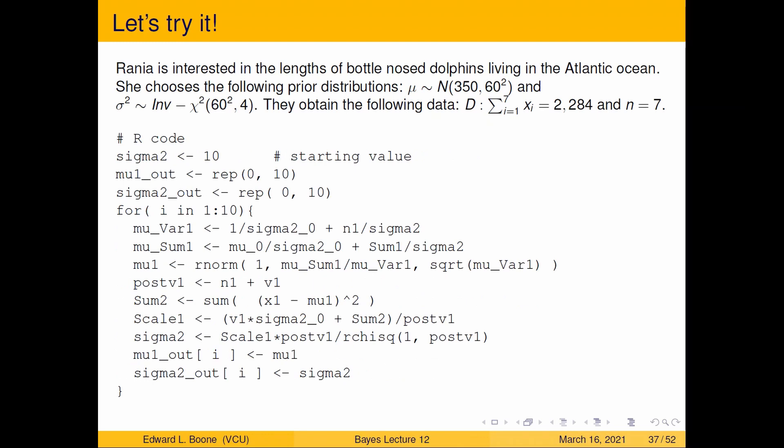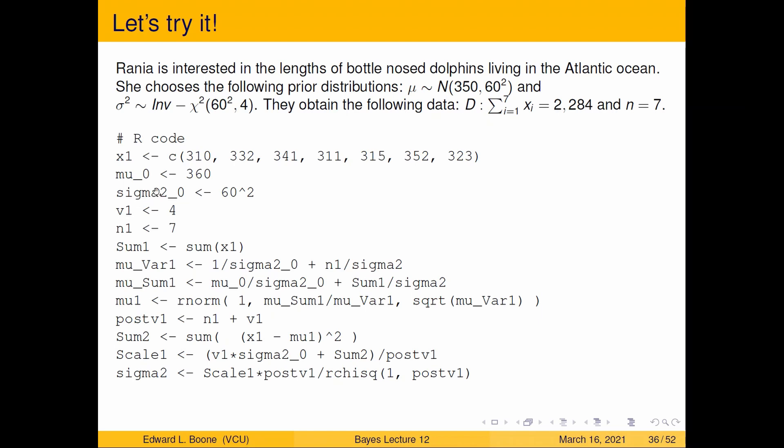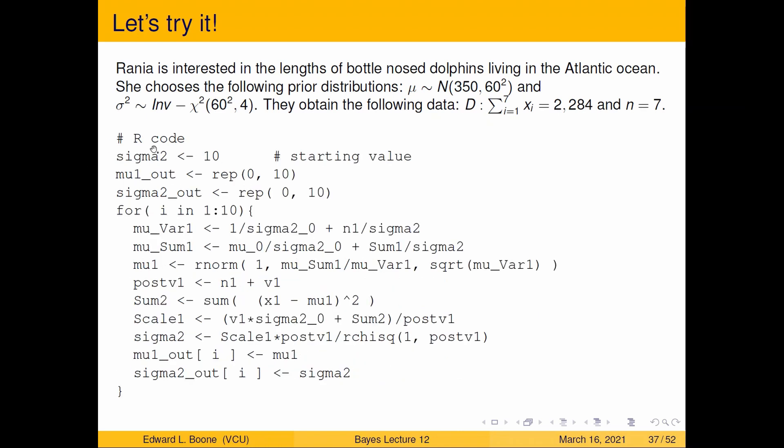Now we've got to put it in a loop. And since we're putting it in a loop, we've got to make some containers to hold the answer. Now notice that's a lot of stuff left the picture. I don't have the n and the nu and the sigma squared and the mu naught anymore, or even the X's in my code. Leave it in your code. This would just be reorganizing pieces. So I get sigma squared of 10. Notice this is our starting value. I have to start someplace. Mu one out, and we're going to do only 10 steps here. We're going to repeat zero 10 times for a container, sigma squared out, repeat zero 10 times for a container. This is the code I had in the other one, except at the bottom, I'm saving off my mu values. So mu one out in the ith position equals the mu one that I found at this iteration of the Gibbs sampler. Sigma squared out i in the ith position is sigma squared that I found from this iteration. And notice they're both randomly sampled along the way.